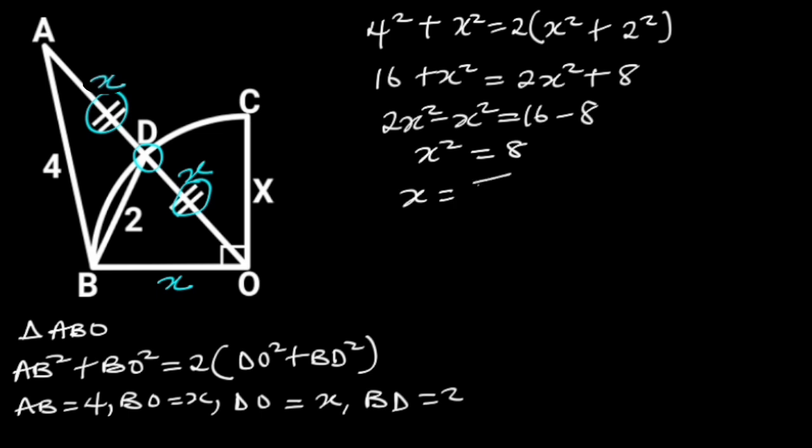Taking the square root of both sides will give us X is equal to 2 root 2 units. Thanks for watching. If you like this video, make sure to subscribe for more.